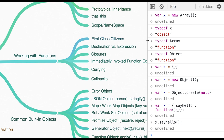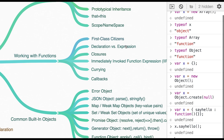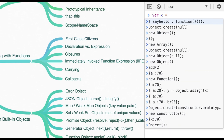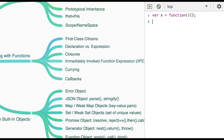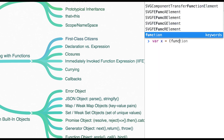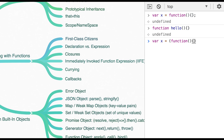Working with functions — we talked about first-class citizens. typeof Function, typeof Object, typeof Array — all are functions. You can write functions in different ways: as an expression like var x = function (anonymous function), as a named function declaration, or as a callback where a function accepts another function as an argument. We also talked about the IIFE (immediately invoked function expression) block, where you write your code inside it.